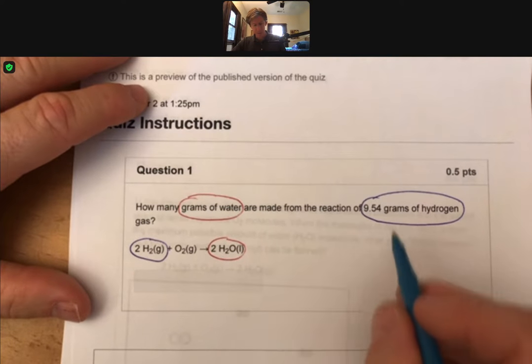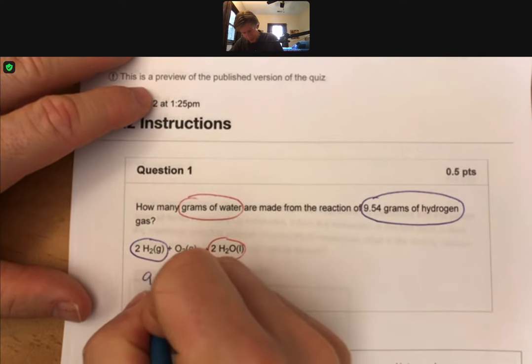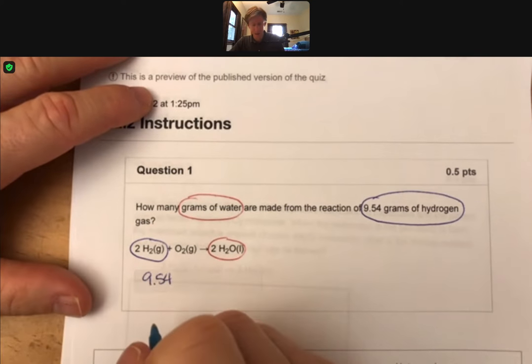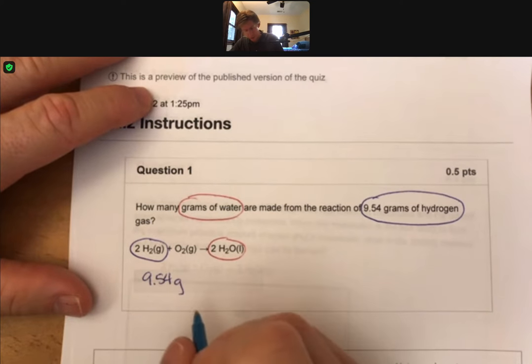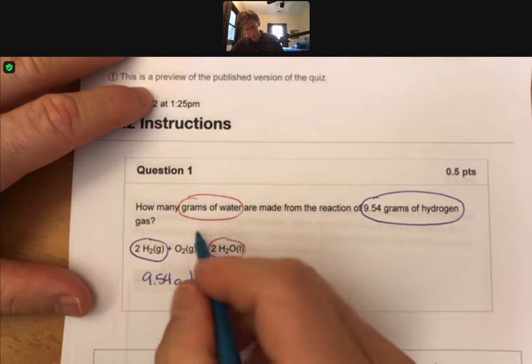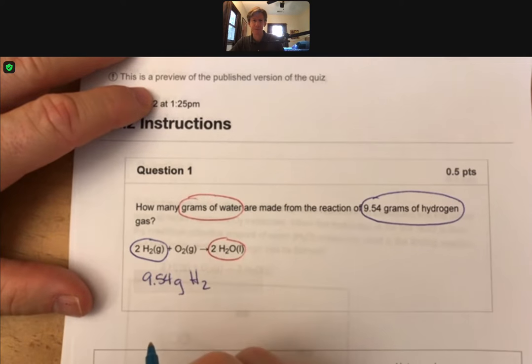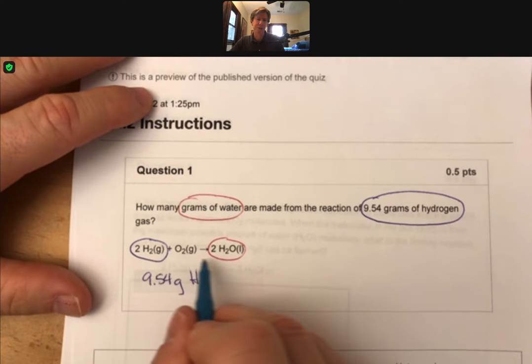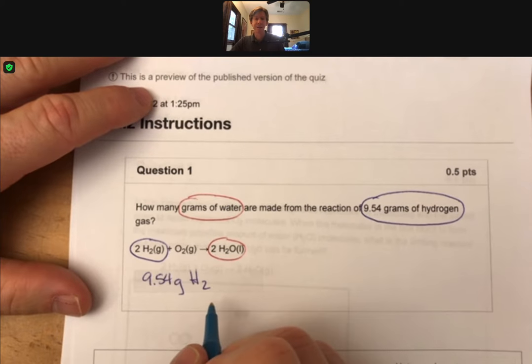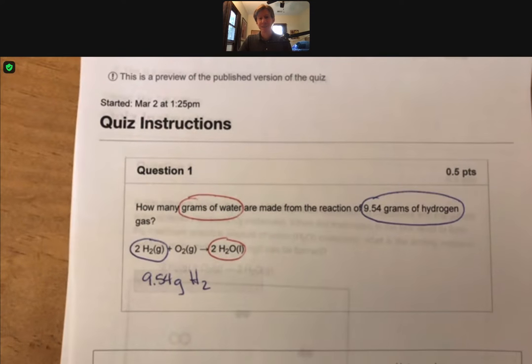And we're going to start with our 9.54. Start always with a number that's in the problem. We are blessed because there's only one number in the actual problem statement up here. And we have a balanced reaction. And just as a side hint, any time there's a balanced reaction in a problem, 99% of the time, you're going to need a mole-to-mole conversion factor to solve the problem. That's just how we roll around here.